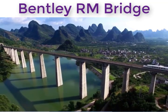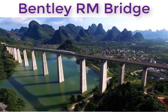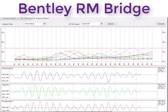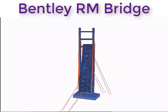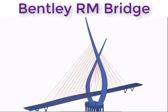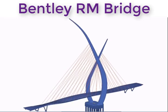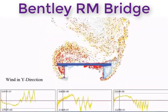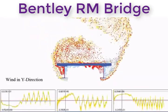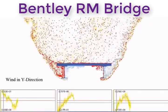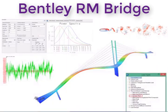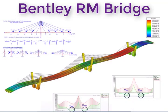RM Bridge offers advanced 4D analysis for high-speed rail, earthquakes, erection control, and more. Include 3D geometry for static and dynamic analysis, including creep, shrinkage, and time effects in schedules. Simulate wind tunnel tests and perform sophisticated wind buffeting analysis, or calculate the nonlinear effects of cable sagging on cable-stayed and suspension bridges.